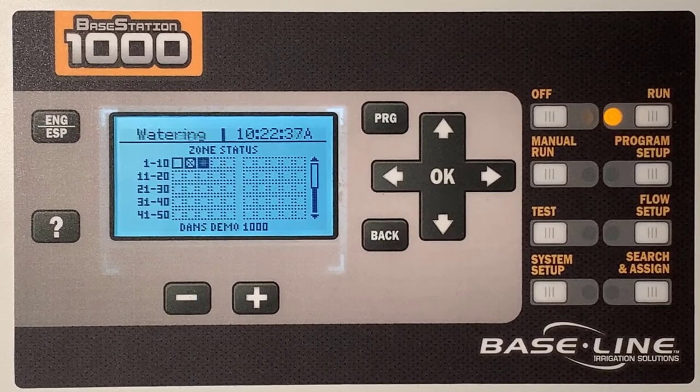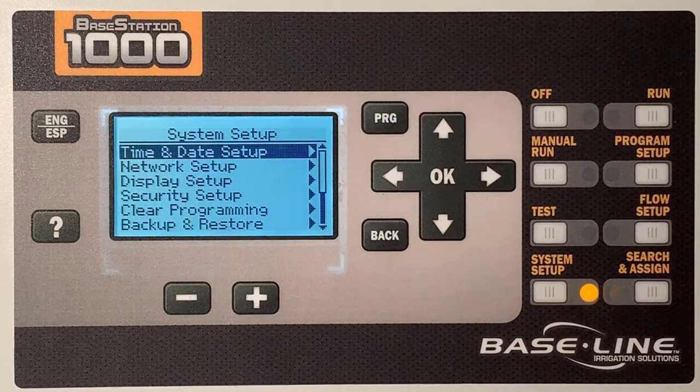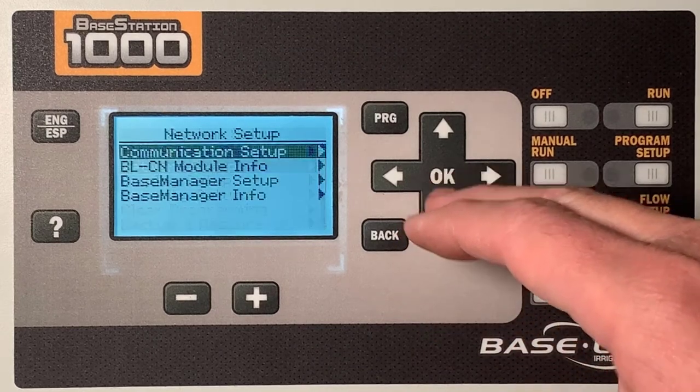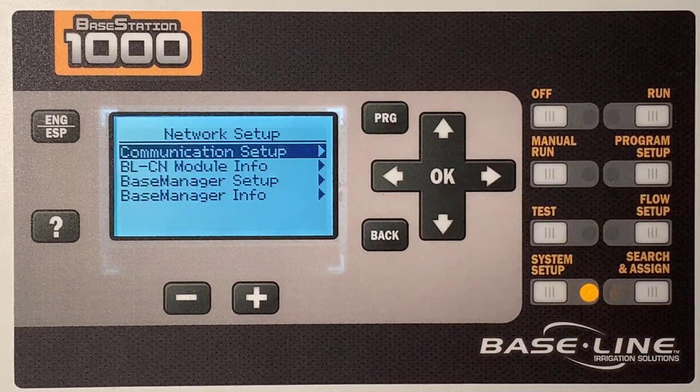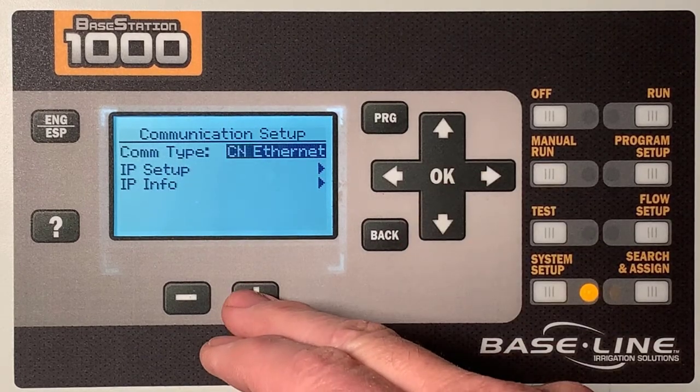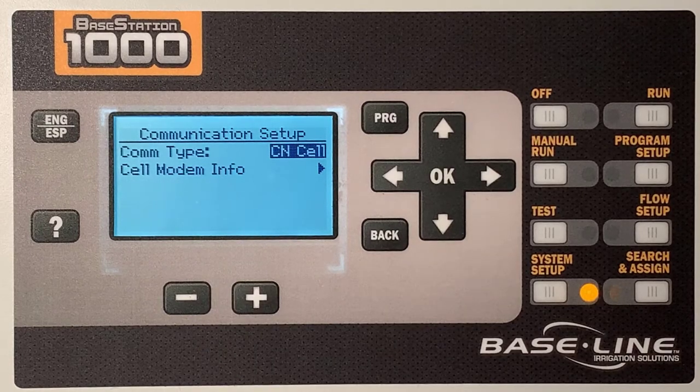It's time to configure the cell module connection. Begin by pressing the System Setup button in the lower corner, use the arrows to navigate to Network Setup, and press OK. At Communication Setup, press OK to see the Communication Type menu. Use the plus or minus buttons to find CN Cell or Cloud Network Cell.